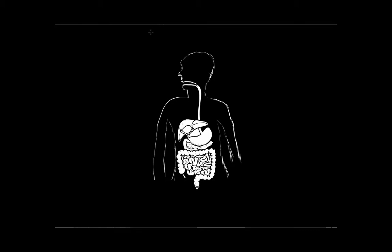When we eat food, we get a lot of different macromolecules that are necessary for us to live from that food. We get things like proteins, lipids, and carbohydrates. What allows us to do that is the digestive system. In this video, I would like to talk about the digestive system and the different parts that it has and sort of the functions.